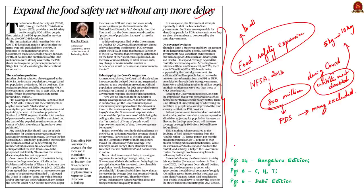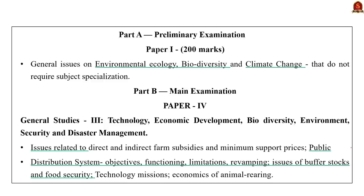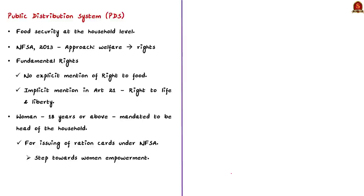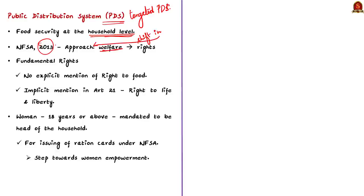In this context, let us see the reasons for excluding people from food safety measures, how these issues are addressed by the court and government, and measures to be taken. The targeted PDS was providing food security at the household level, but the enactment of the National Food Security Act 2013 brought a tremendous shift — it shifted the approach of food security from a welfare to a rights-based approach. Right to food is not explicitly mentioned in the fundamental rights but is implicitly included under Article 21, the right to life and liberty.